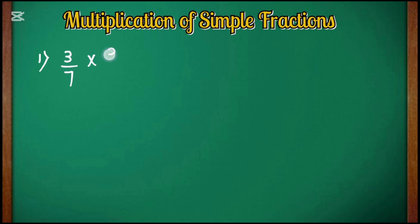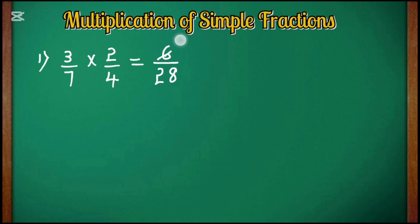The first example is 3/7 × 2/4. To multiply these two fractions, we simply multiply the numerators of both fractions — 3 × 2 = 6 — and multiply the denominators — 7 × 4 = 28. So we get 6/28. This is not our final answer; we can simplify it. After simplification by dividing by 2, we get 3/14 as our simplest final answer.